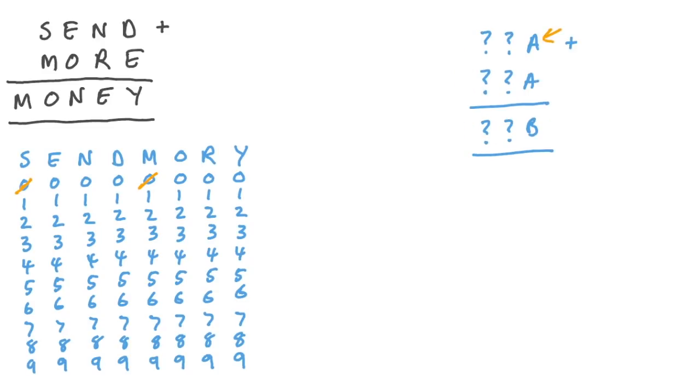What if we had the same letter in the ones column for the two numbers, but then a different letter in the ones column for the answer? Then B would have to be even, 0, 2, 4, 6, or 8. But again, that's not going to help us because that's not the pattern we've got in that column.